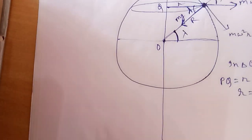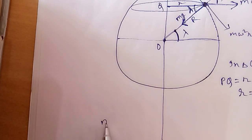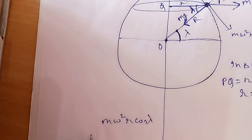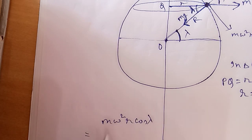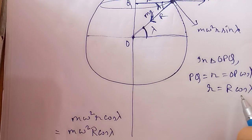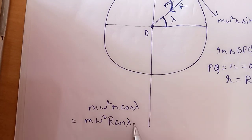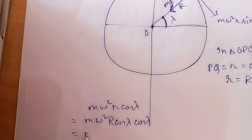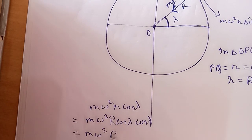The component mω²r·cosλ can now be written by substituting small r = R·cosλ: it becomes mω²·(R·cosλ)·cosλ, which gives mω²R·cos²λ.